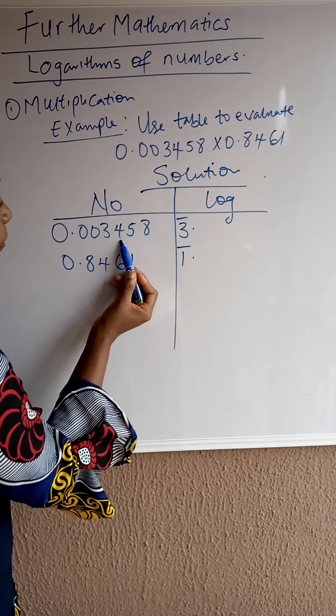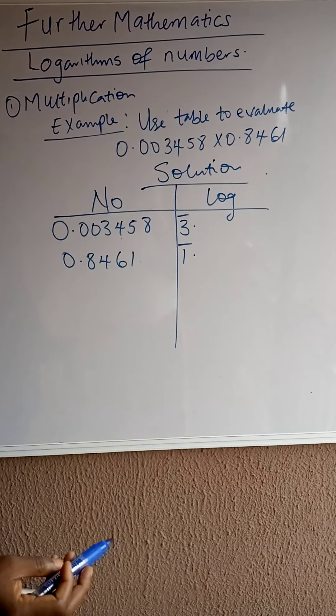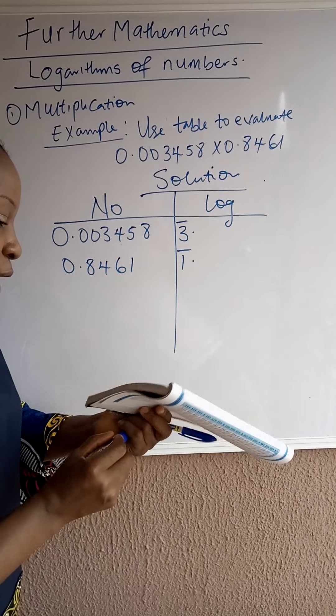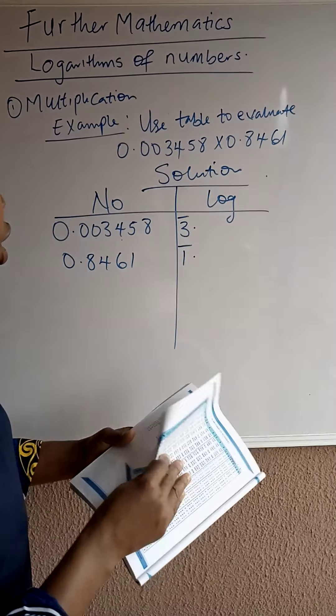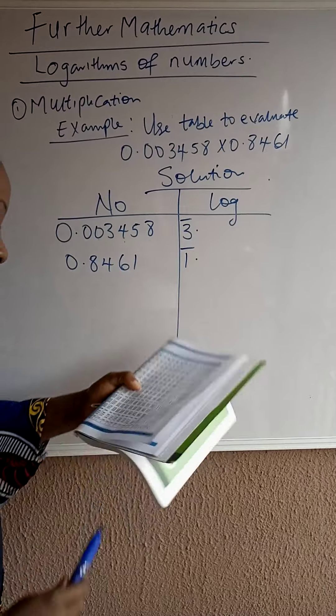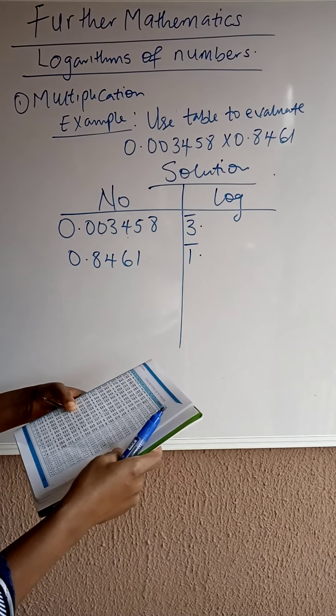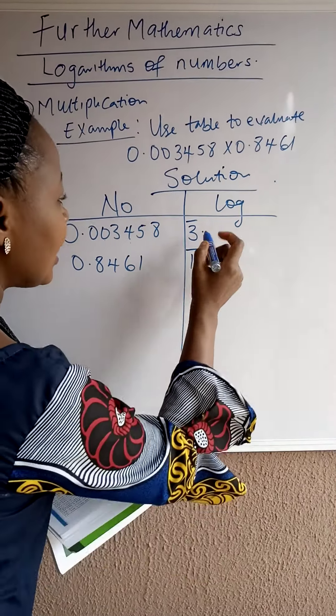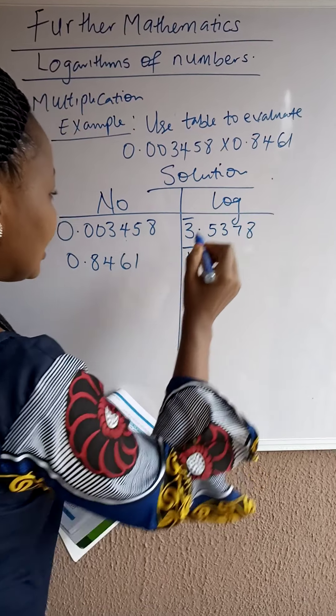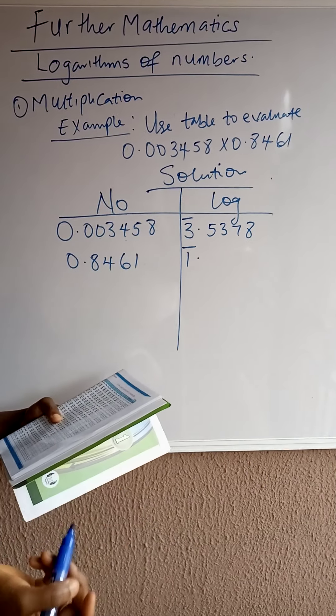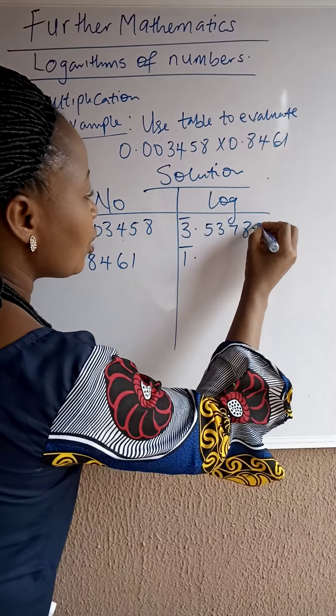Then, we will now look for the logarithm of 34 under 5. We check our logarithm table and check 34 under 5. And the log of 34 under 5 is 5378. The difference is 8. That's plus 10.